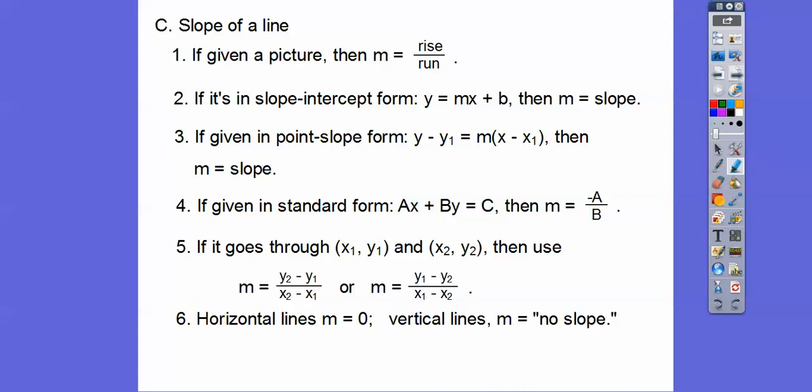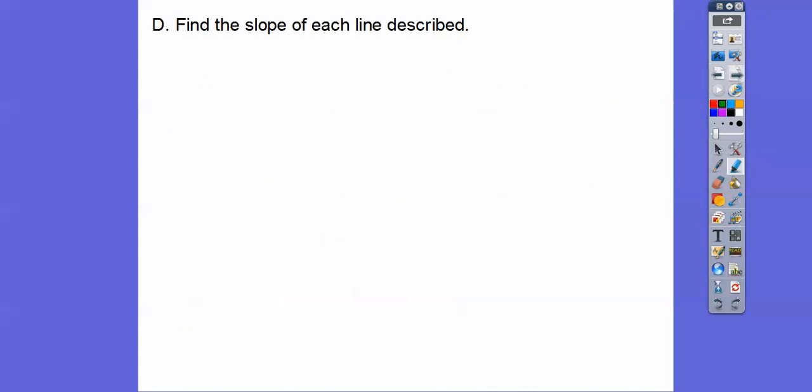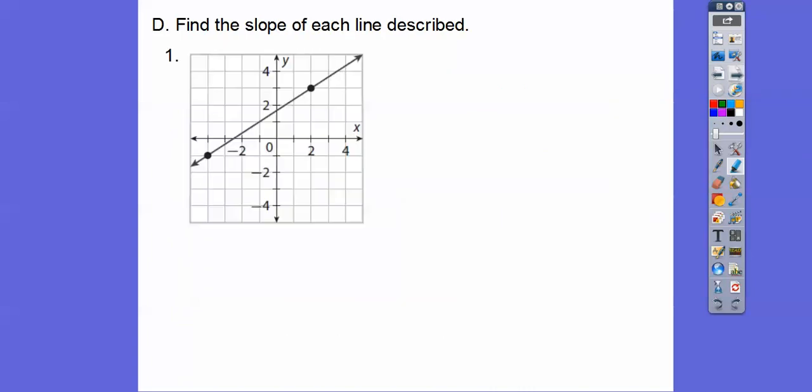Horizontal lines have slope zero. Vertical lines are no slope. So find the slope of each line. Here we're giving a picture. So it's rise over run. So 4 over 6 reduces to 2 over 3.